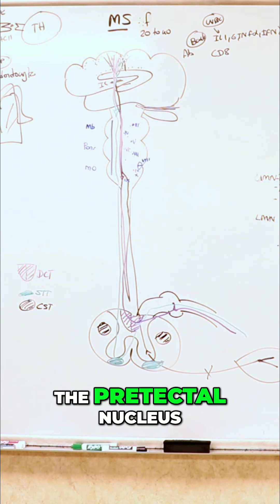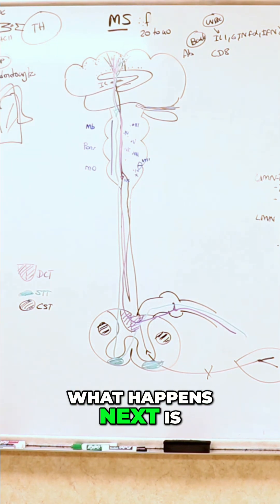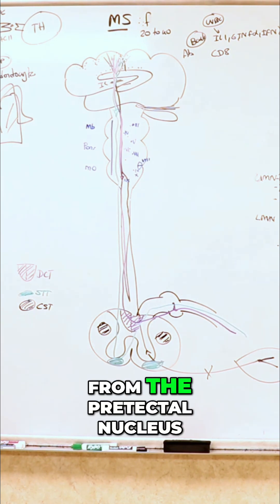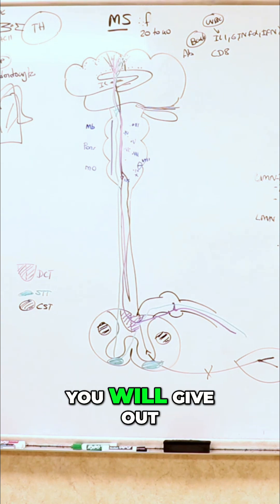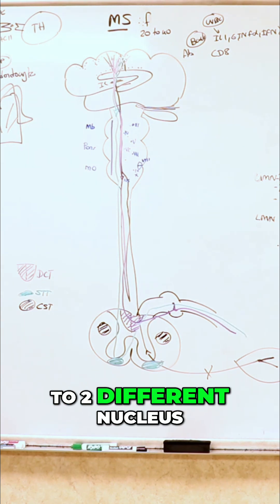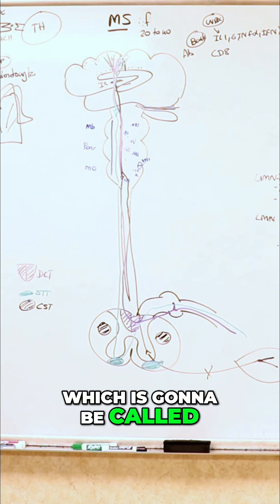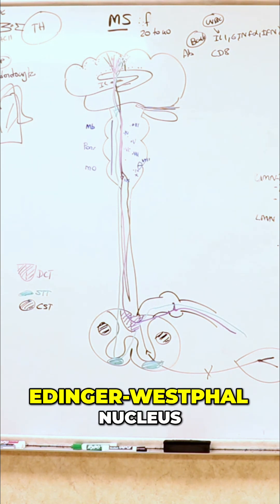Once you go to the pretectal nucleus, what happens next is the most important thing. From the pretectal nucleus, you will give out a fiber to two sides, to two different nuclei which is going to be called Edinger-Westphal nucleus.